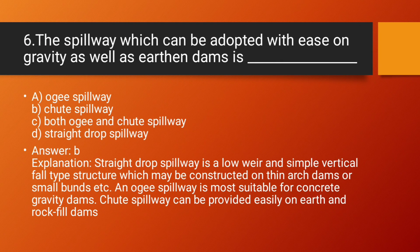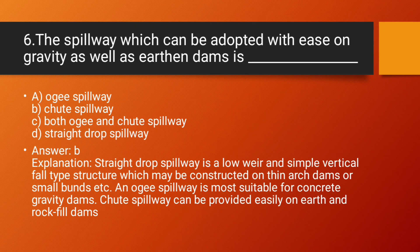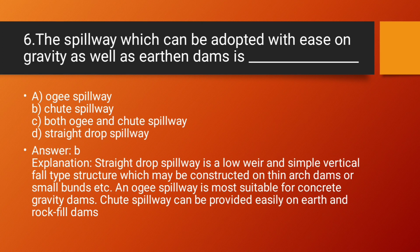Question number 6: The spillway which can be adopted with both gravity as well as earthen dams is — Option A: Ogee spillway. Option B: Chute spillway. Option C: Both Ogee and Chute spillway. Option D: Straight drop spillway. Answer: Chute spillway. Explanation: A straight drop spillway is a low weir and simple vertical-fall structure suitable for thin arch dams or small bunds. An Ogee spillway is most suitable for concrete gravity dams. A chute spillway can be provided easily on earth and rock-fill dams.